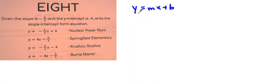So if we insert, they say the slope is negative 2 thirds. So we're going to take and replace m with negative 2 thirds, and we're going to replace the y intercept with negative 4.